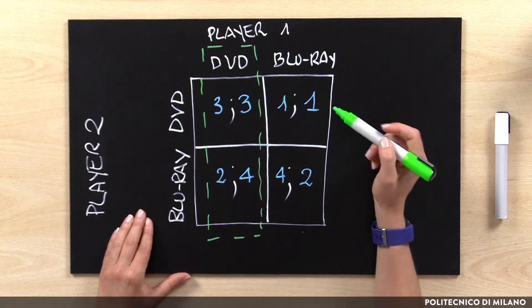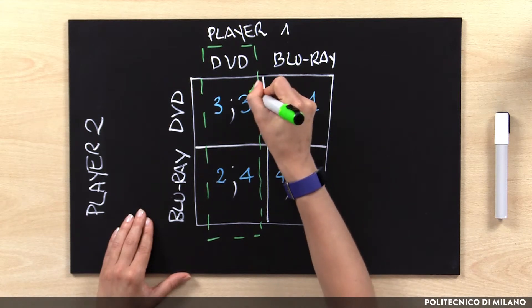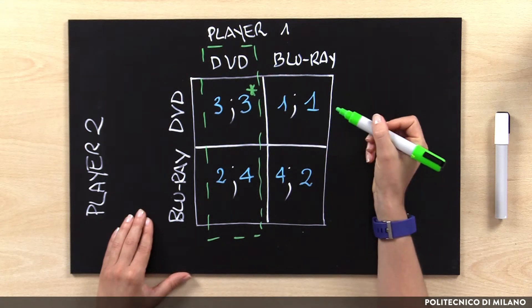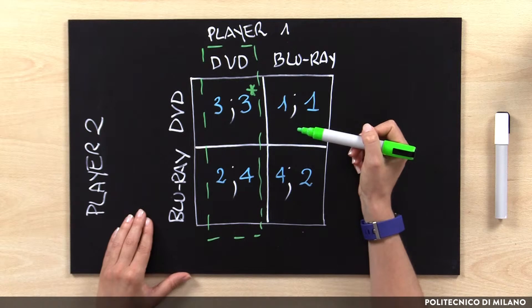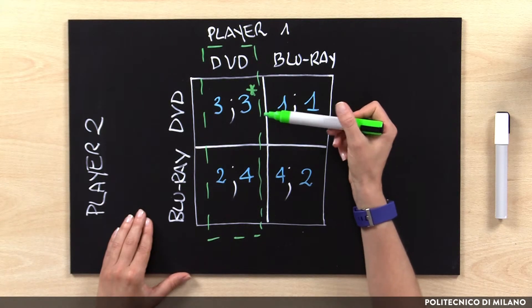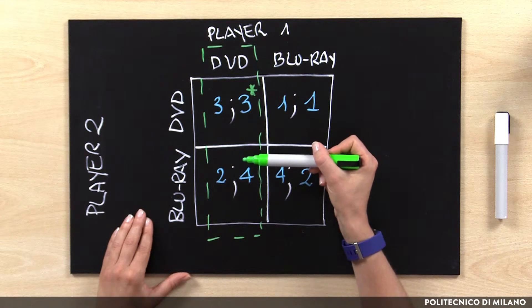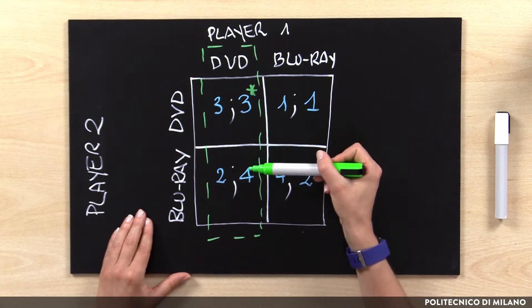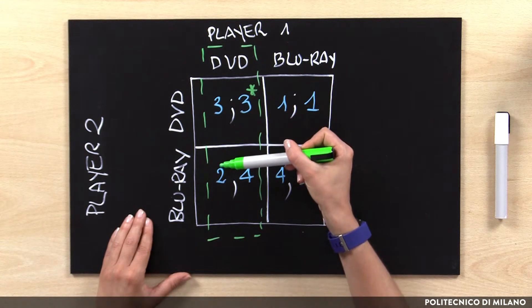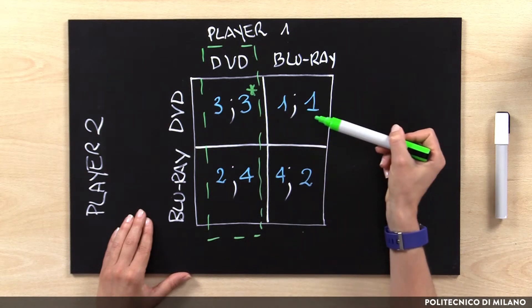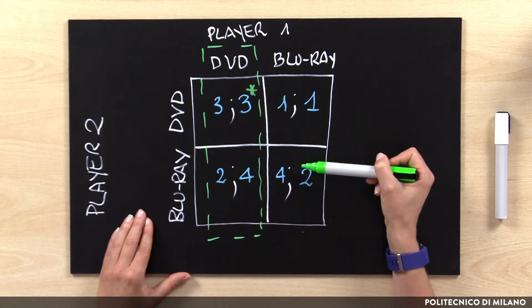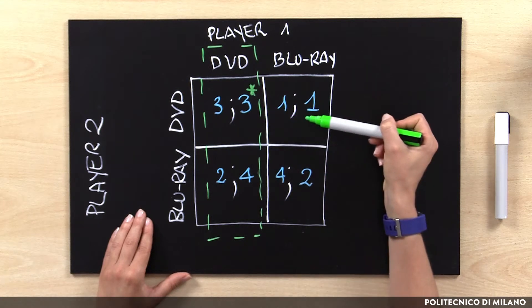Considering our example, we actually have 3 different Pareto-efficient solutions. 3-3 is Pareto-efficient because no other solution improves performance for both actors. Moving for example to 2-4, payoff is improving for Player 1 but decreasing for Player 2. The same is true for 4-2. In case of 1-1, payoff is decreasing for both actors.